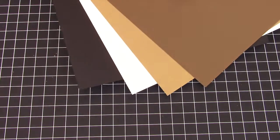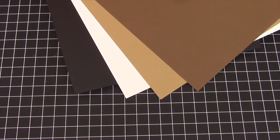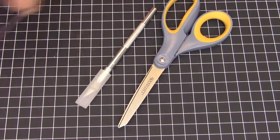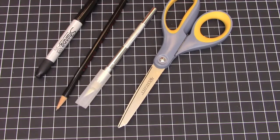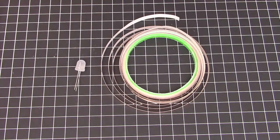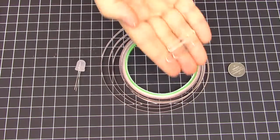You will need construction paper in brown, tan, white, and black. You will also need scissors, exacto knife, pencil, sharpie, and glue stick or tape. You'll need your conductive tape, red LED, 2032 battery, and paper clips.